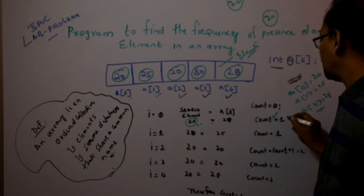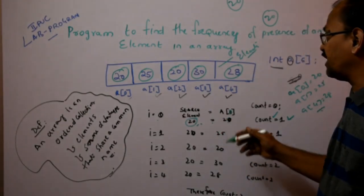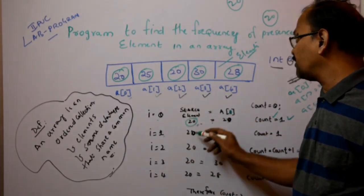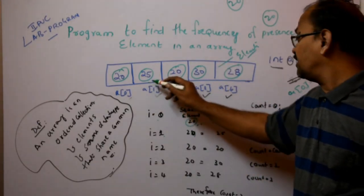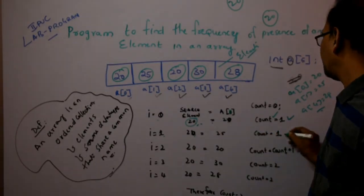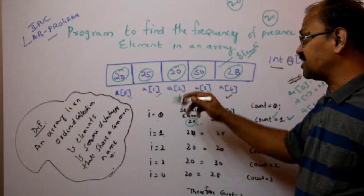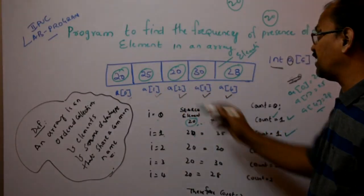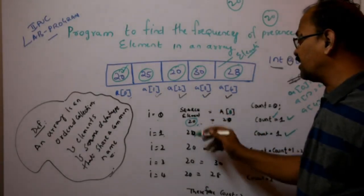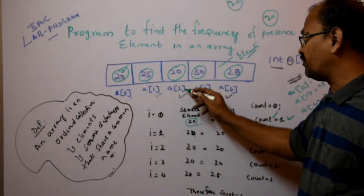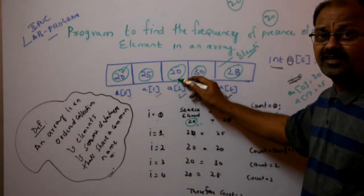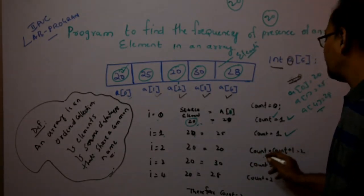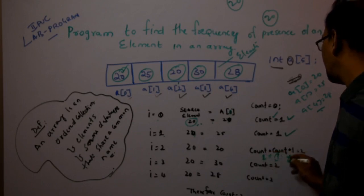Previously the counter was 0, now it will become 1. When we enter the loop again, I becomes 1. The first location is A[1] which is 25, but the search element is 20. 20 is not equal to 25, so the condition is false and the count remains 1. Then I becomes 2 and A[2] is 20. The search element is 20, and 20 is equal to 20 — condition is true. The count was previously 1, now it becomes 2. The value is repeated twice at this point.